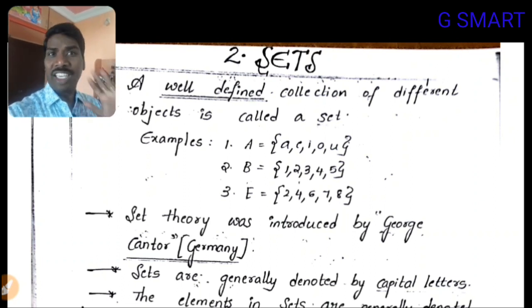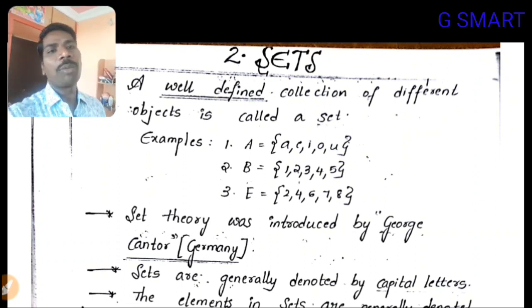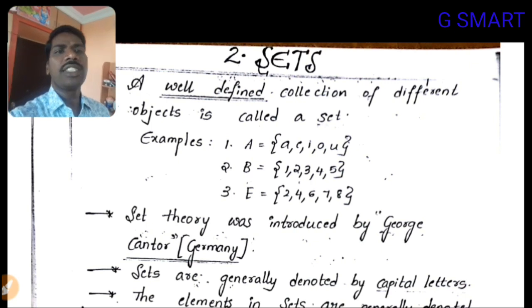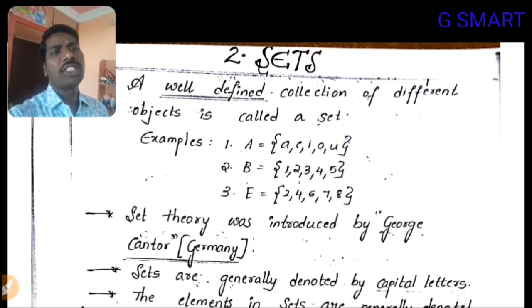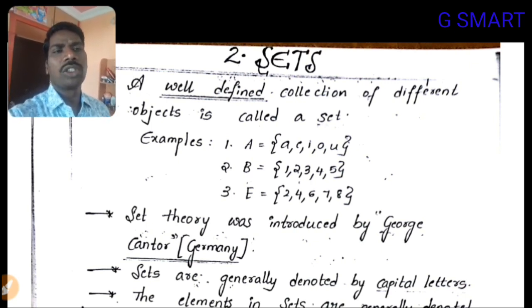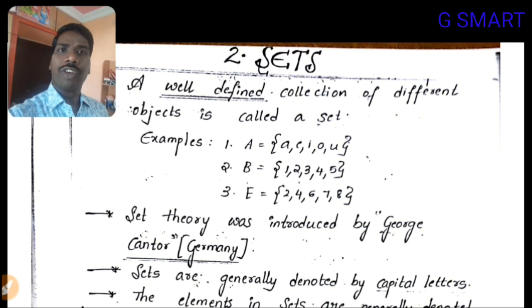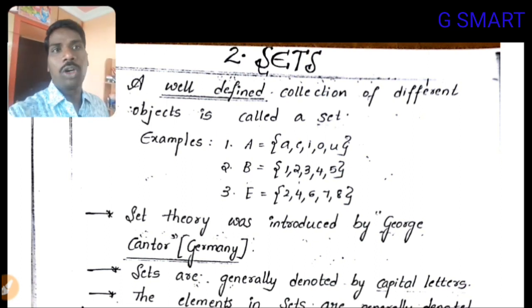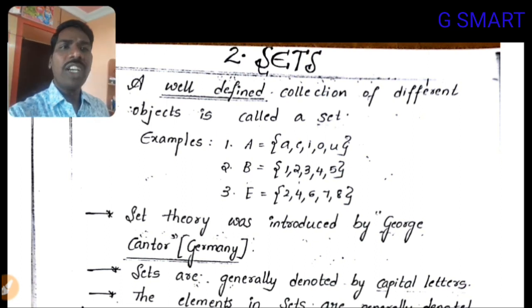Hi friends, welcome to Govi Smart Channel. I'm going to explain sets. In the sets policy we will get 4 to 5 marks, so listen carefully and you will definitely get 4 to 5 marks.